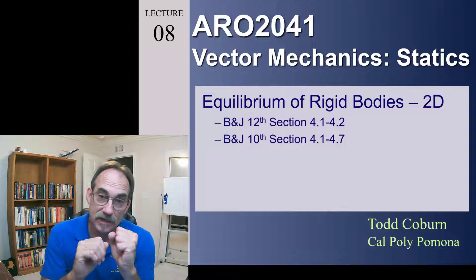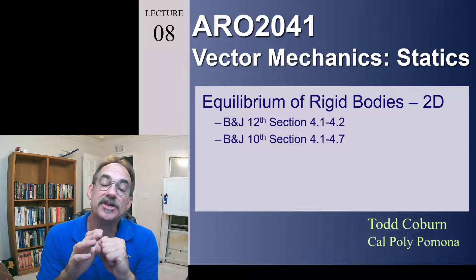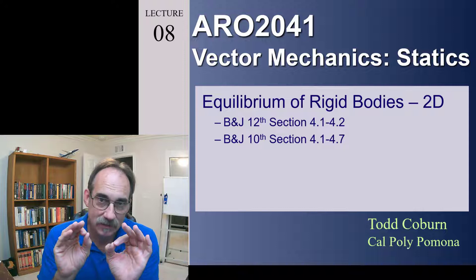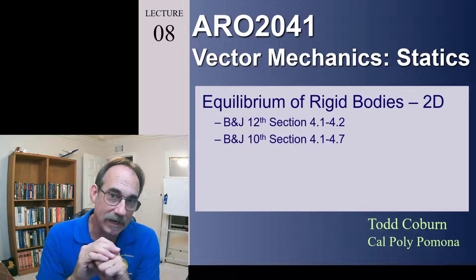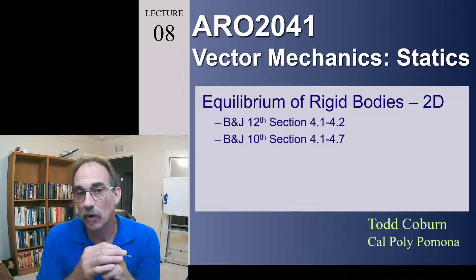So far we've seen that with particles, we're pretending that all of the area occurs at one point — the entire structure. Therefore, we can treat it as just a summation of forces acting on that point, and they have to sum to zero. When we have rigid bodies, we have to pay attention to not only the forces, but where they're located, because those forces will cause moments based on where they're applied. So now we have summation of forces and summation of moments.